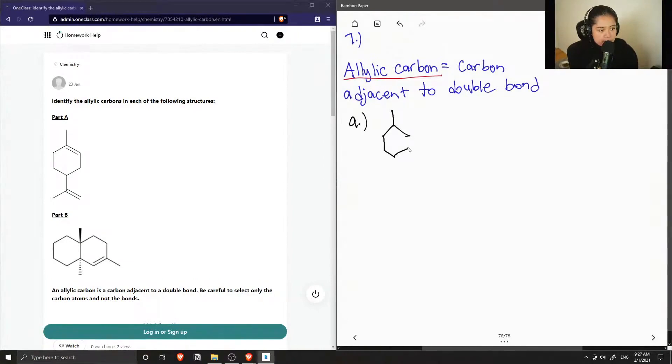Okay, so I'm just going to draw this out. And you can see that there are two double bonds in the structures. And I can label which ones are allylic. I'll just label it in red. So, it isn't the carbons that are participating in the double bond. They're the carbons that are beside it.